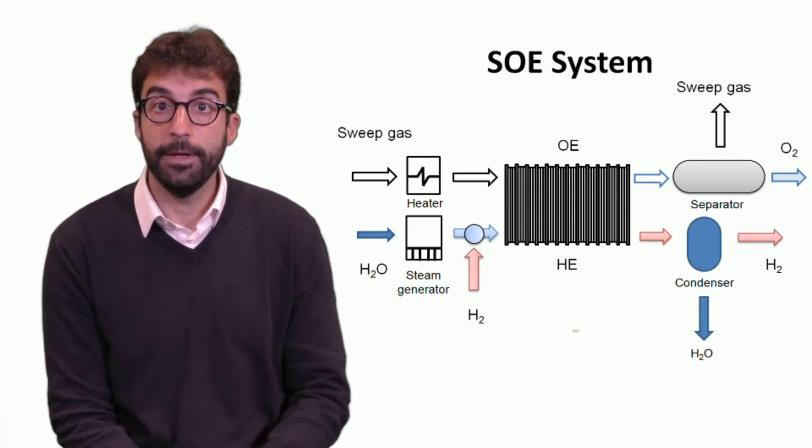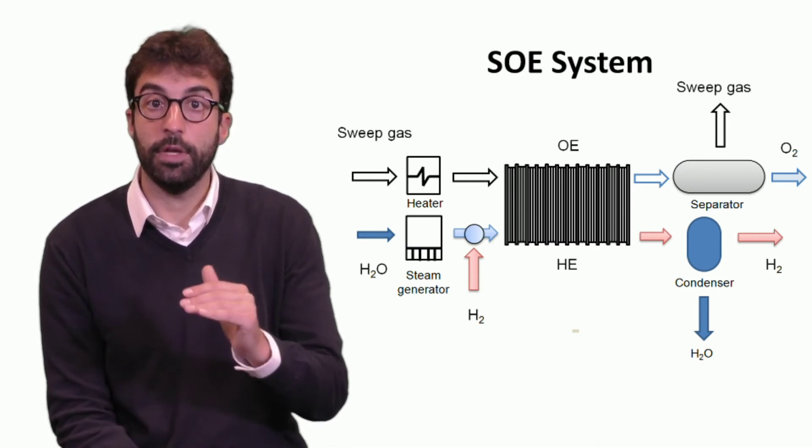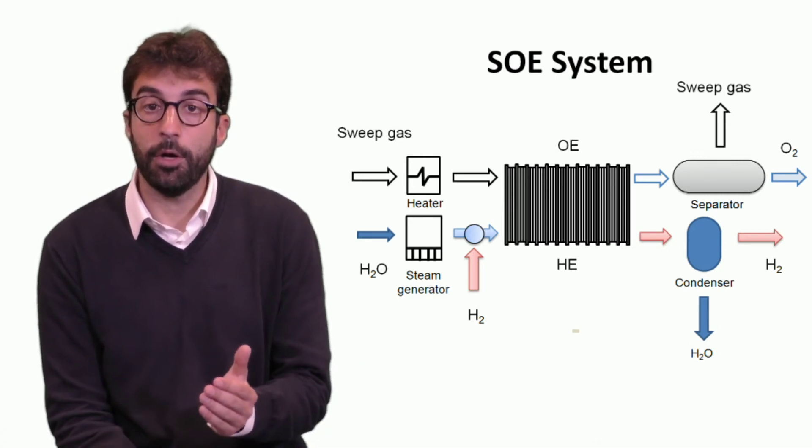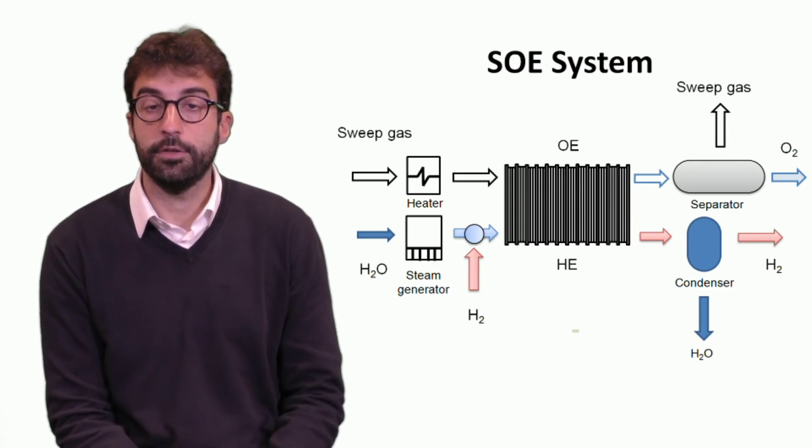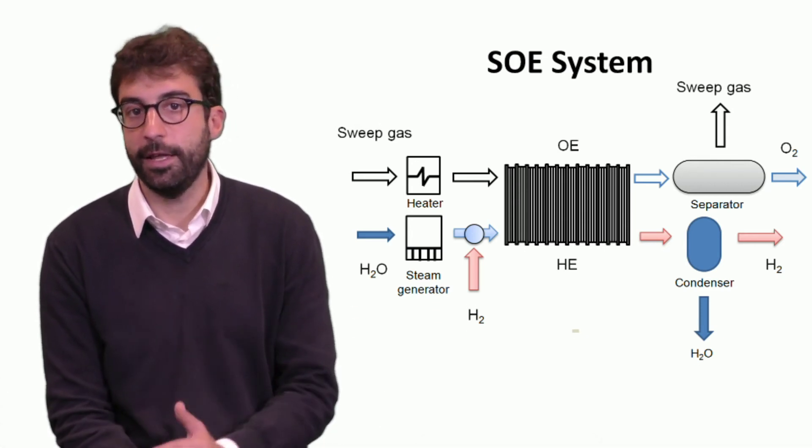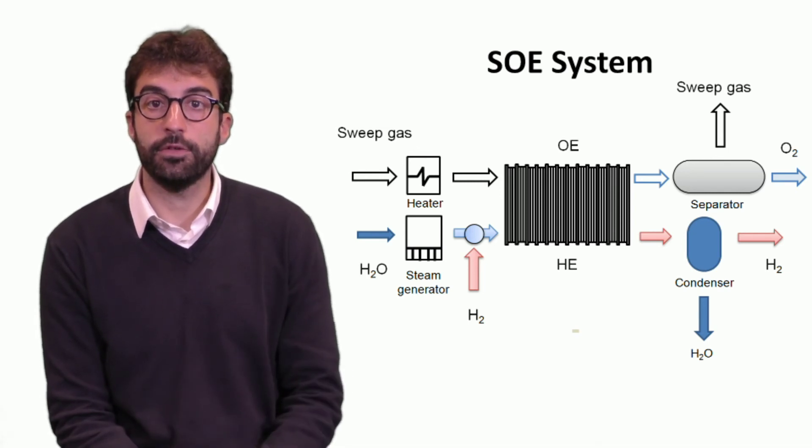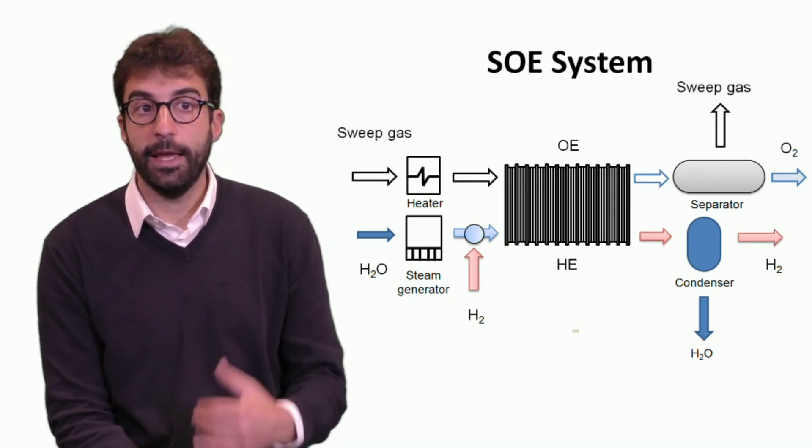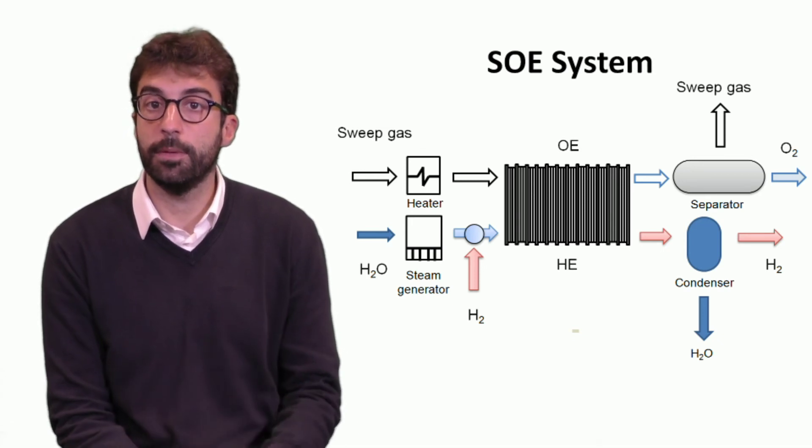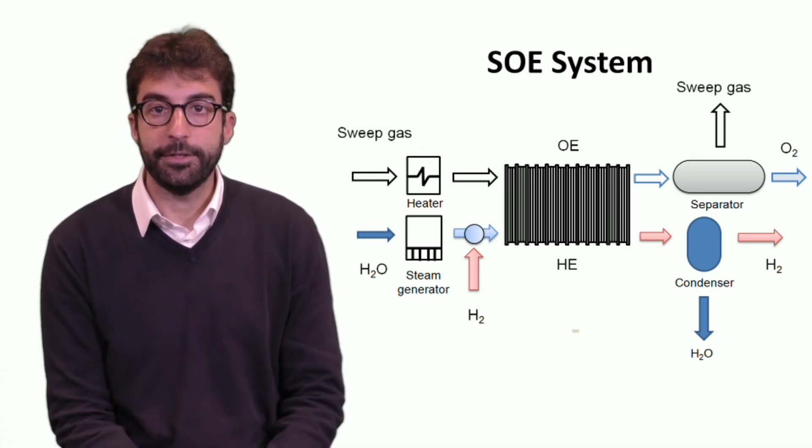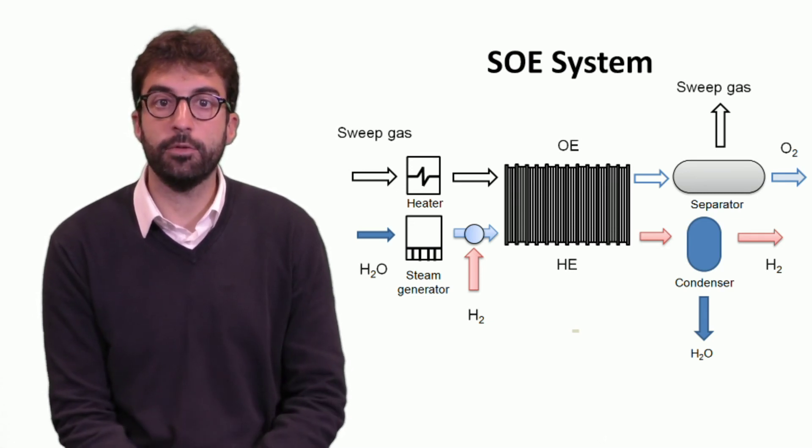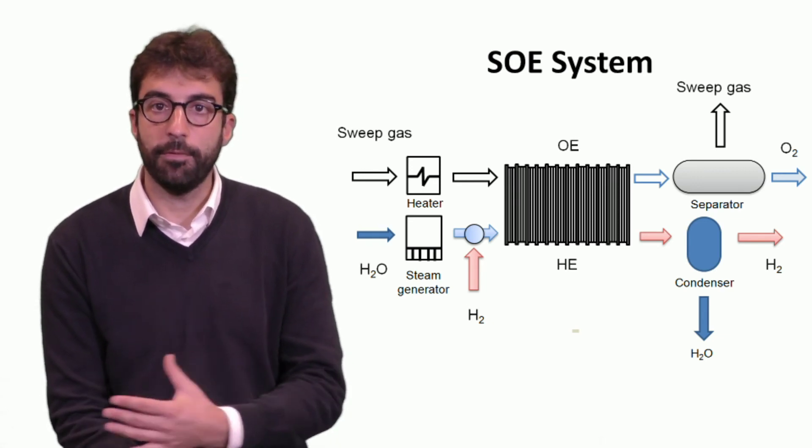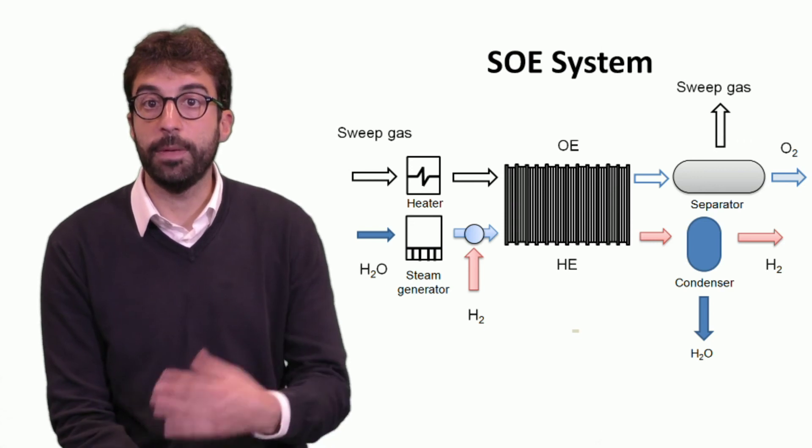If we look at the system, we need to heat up steam in the steam generator. We need to produce high quality hydrogen, so we need to separate the amount of steam that is still in the outlet with a condenser. On the other side, we need to heat up the sweep gas—we cannot flow cold sweep gas inside the high temperature fuel cells. If we want to obtain pure oxygen, we may need to separate the sweep gas. We can balance the system, couple steam generation and condenser, or recirculate part of the steam. There are several solutions to optimize the system design.